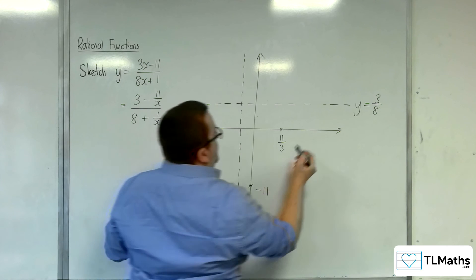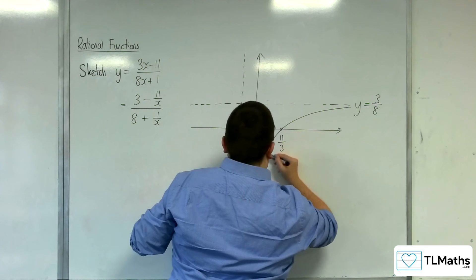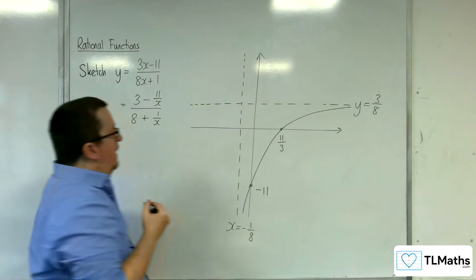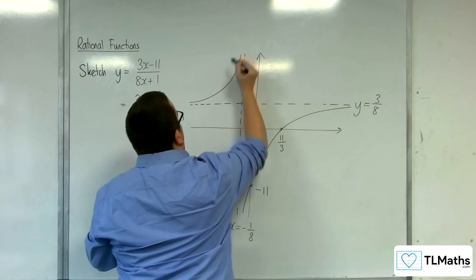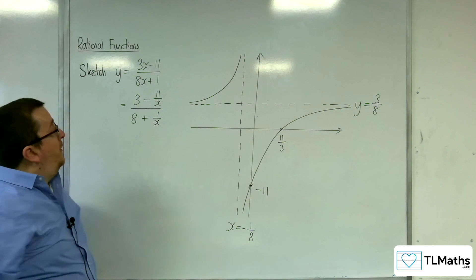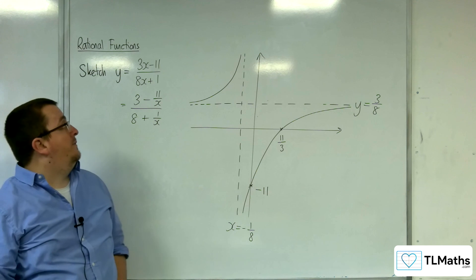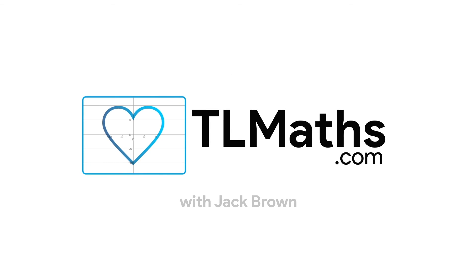And so we're tending towards those two asymptotes. So something like that. And the rest of the curve must be up here because we can't be crossing the x-axis again. And so that's my sketch of y equals 3x take away 11 over 8x plus 1.